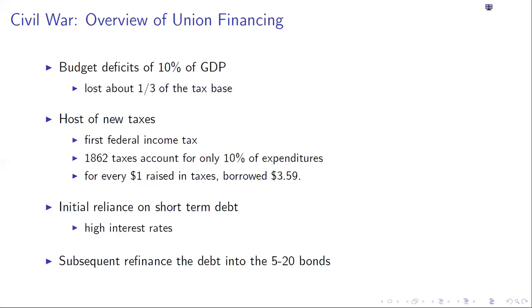In the complete markets model, taxes never change — they're just a constant — and debt moves up and down, absorbing shocks. Debt is sometimes called a fiscal shock absorber. When the government issues debt, it's like buying an insurance contract from its bondholders.